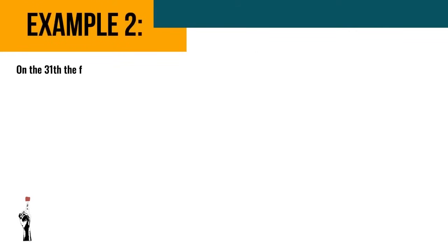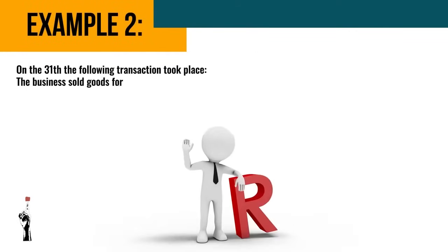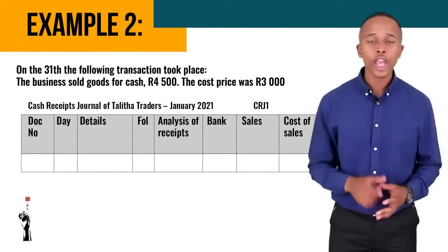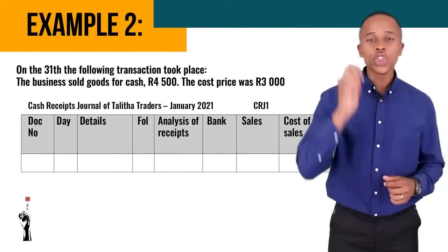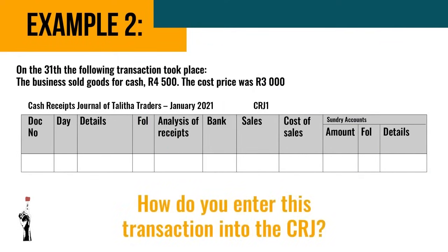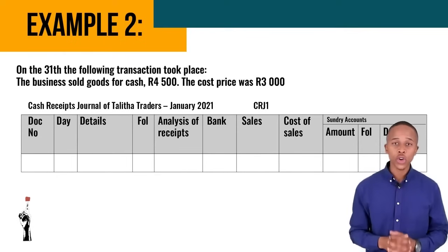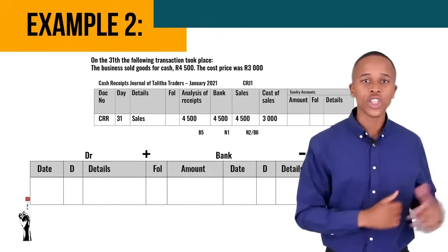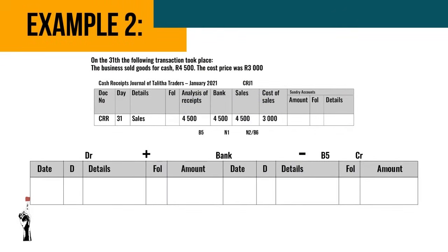Let's look at a more difficult example. On the 31st, the business sold goods for cash for four thousand five hundred rand; the cost price was three thousand rand. Can you remember how to enter this transaction into the CRJ? We first put this on the CRJ — and this is what it would look like. Now we take this information and post it on the general ledger.